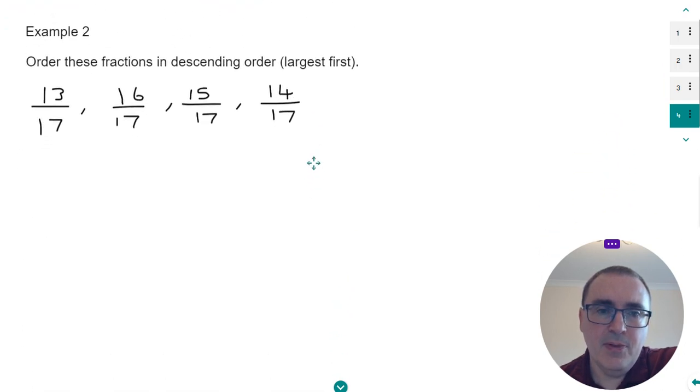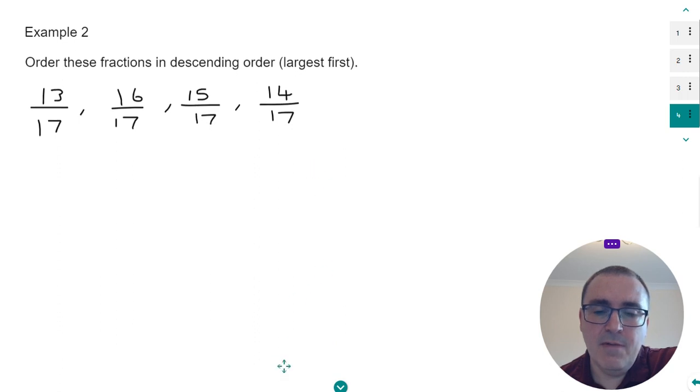So let's move on to example two. This time we need to order the fractions in descending order. That means we need to start with the largest fraction first.